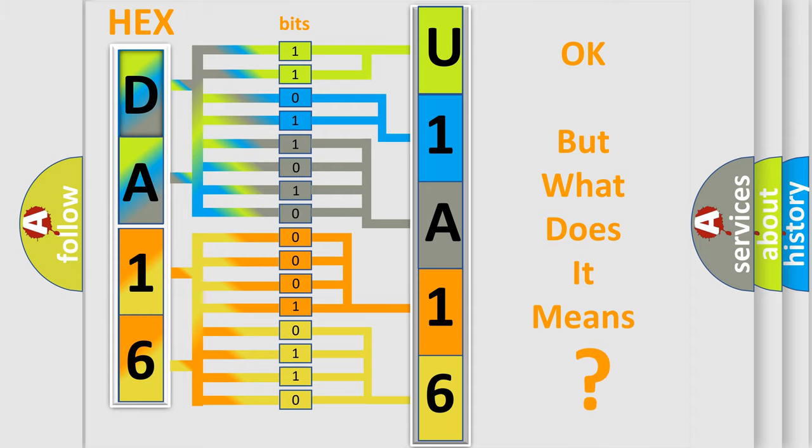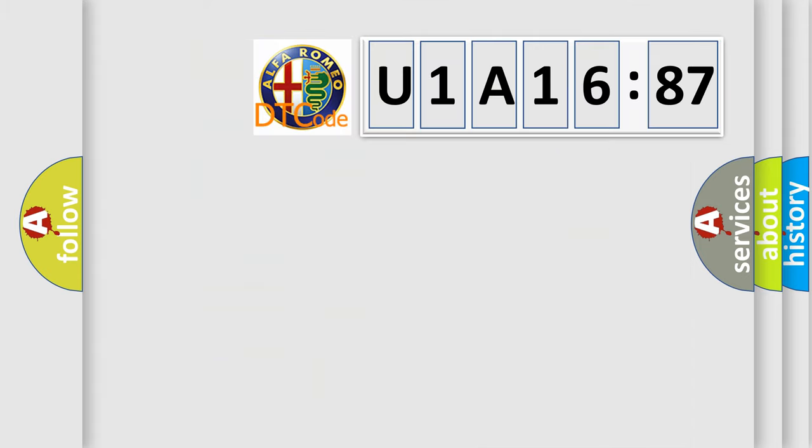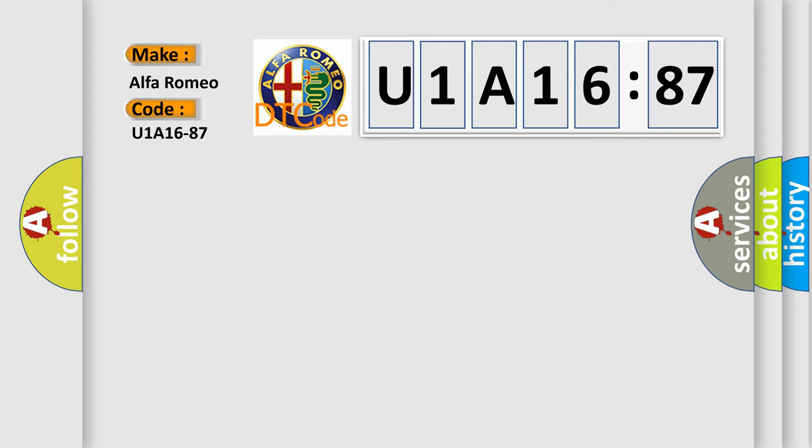The number itself does not make sense to us if we cannot assign information about what it actually expresses. So, what does the diagnostic trouble code U1A1687 interpret specifically? Alfa Romeo car manufacturers.